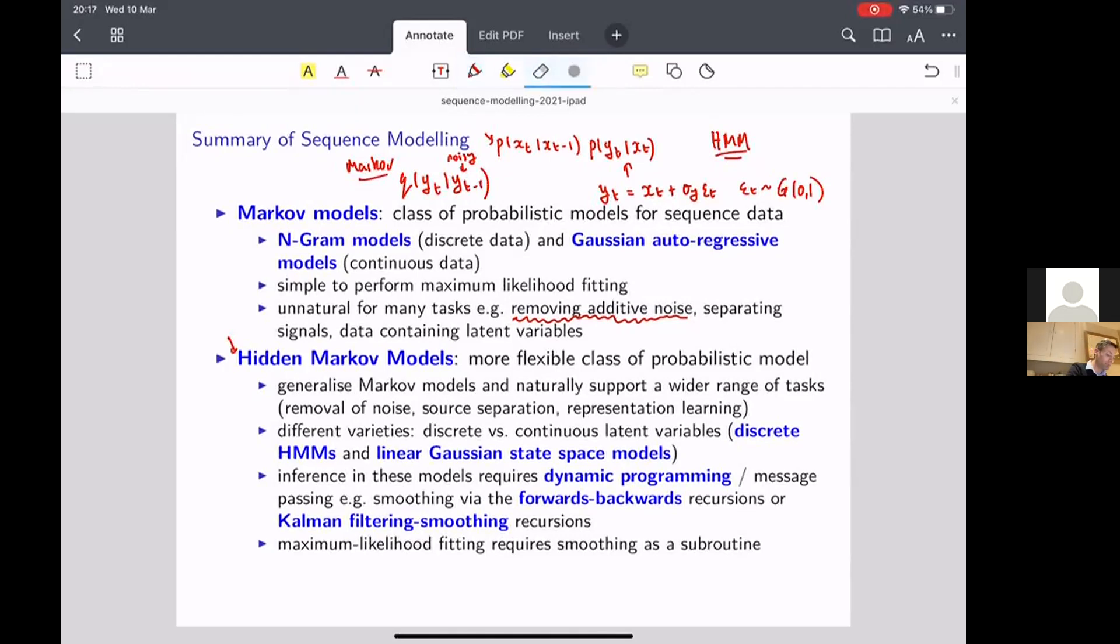So let's just consider that for the linear Gaussian state space model again. We'll go back to this formulation at the top of the page here. If your Y of T has the same dimension as X of T, and this in general is given by this Gaussian,